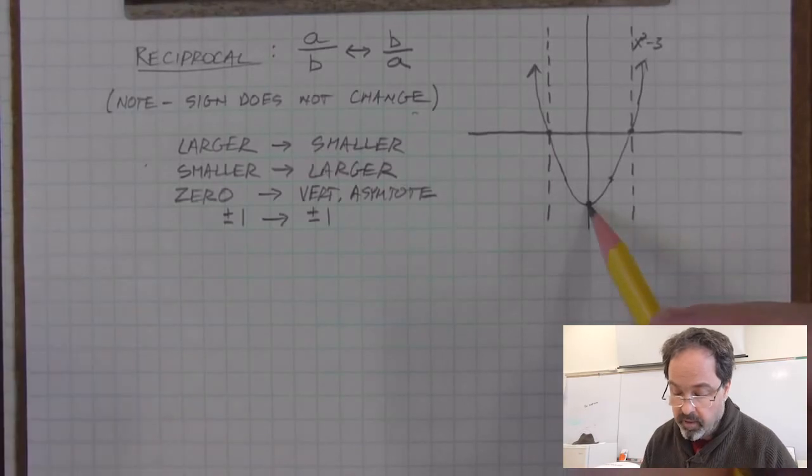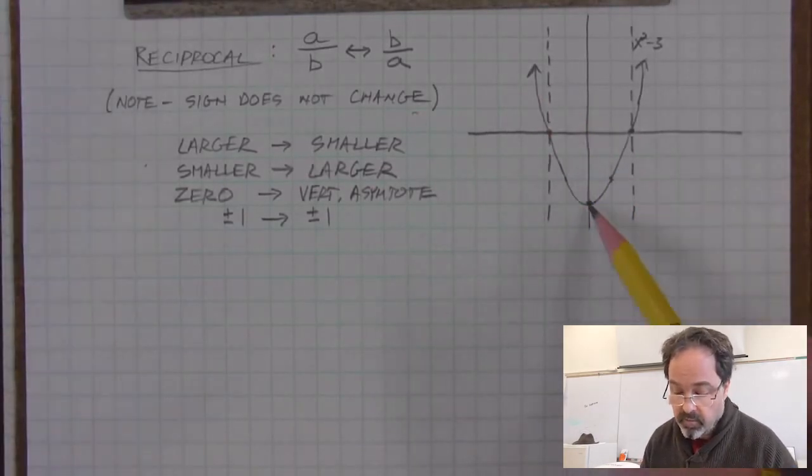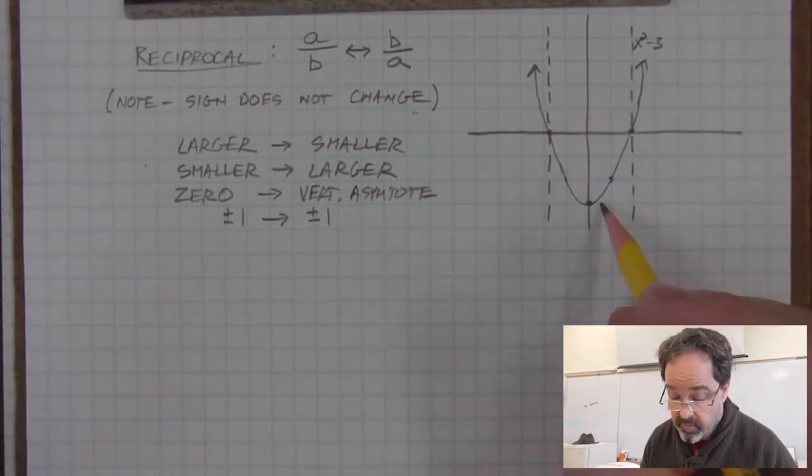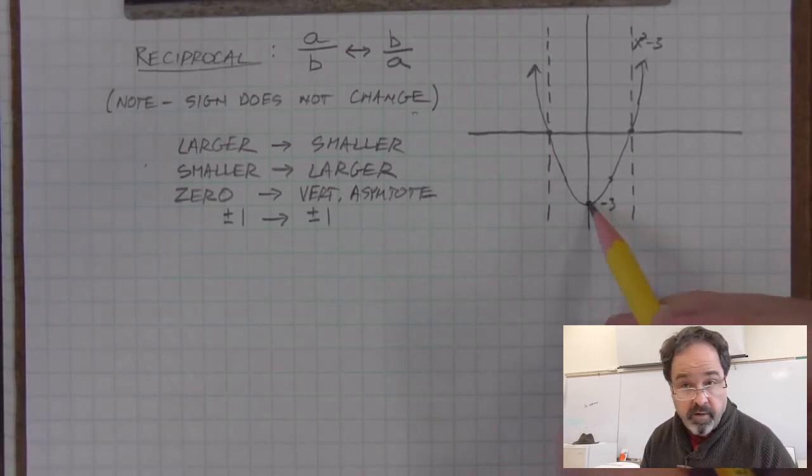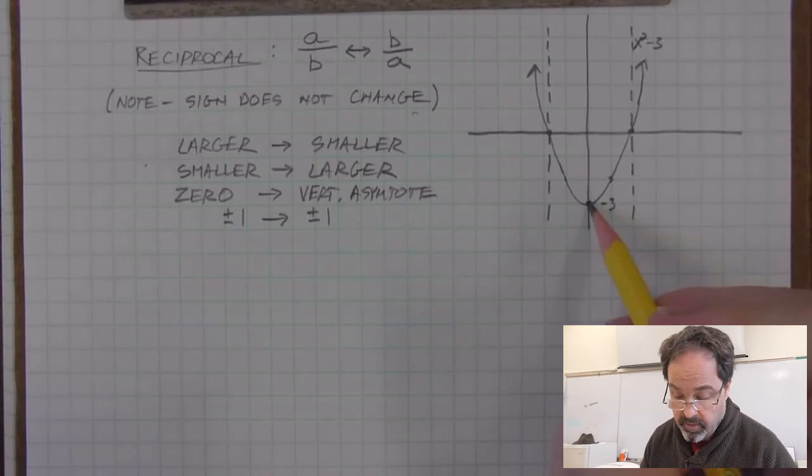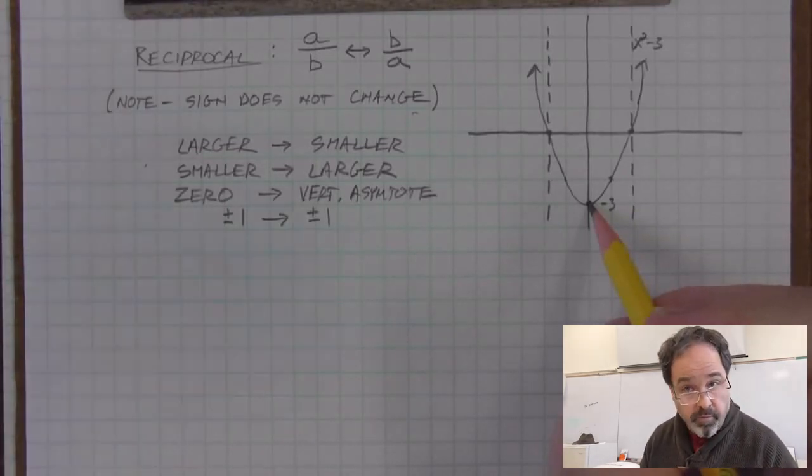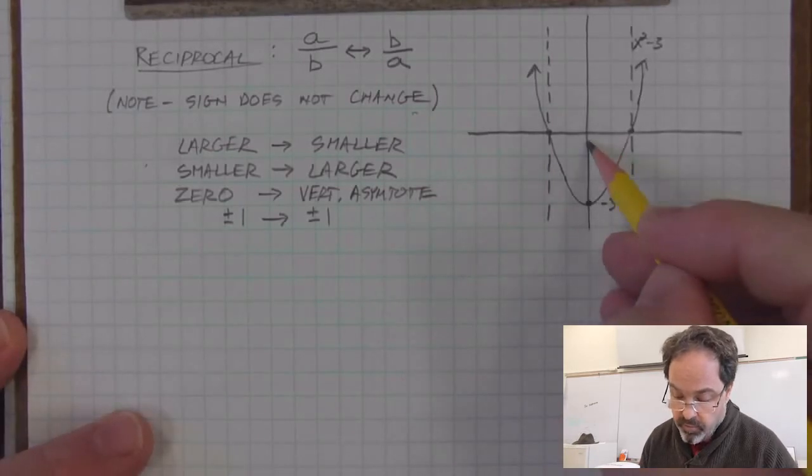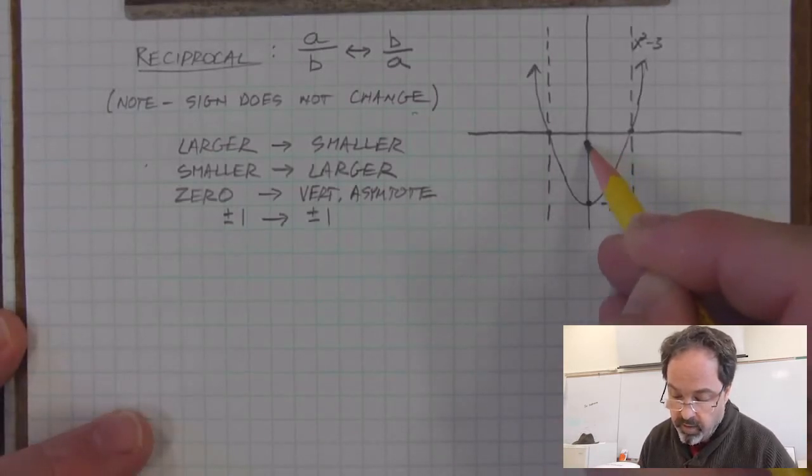Next, I'm going to consider this point right here, which is a minimum. It's the lowest point. And it has a specific value, negative 3. So finding the reciprocal of that will give me a concrete value to graph and plot. The reciprocal of negative 3 is still negative 1 third. And 1 third is approximately here. So I'm going to put a point on my new graph right there.